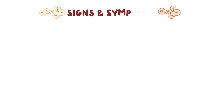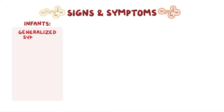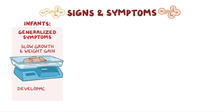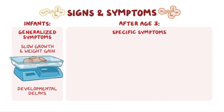This buildup of methionine and homocysteine amino acids can cause a wide range of symptoms which vary by severity and age. Infants experience generalized symptoms such as slow growth and weight gain, as well as possible developmental delays. After age 3, more specific symptoms begin to appear.